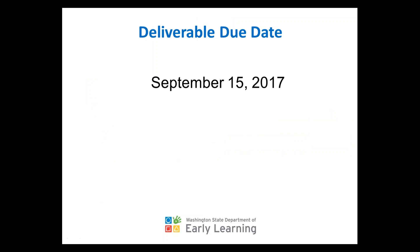This deliverable is due September 15th. We just wanted to point out that if contractors are having trouble meeting that deadline, your September voucher will not be impacted until October 15th. So while we're not changing the date of the deliverable, we're still giving you a little bit of wiggle room before that would affect your voucher.